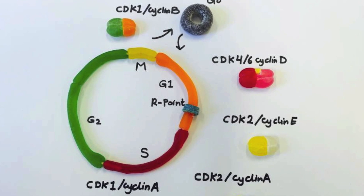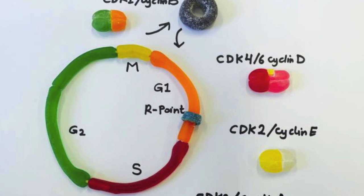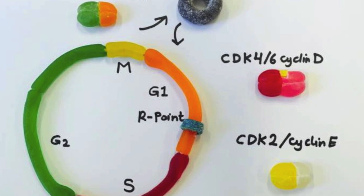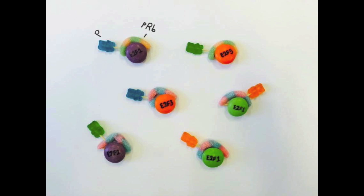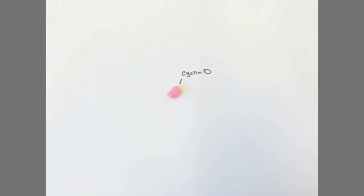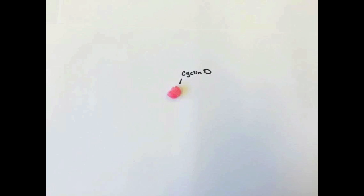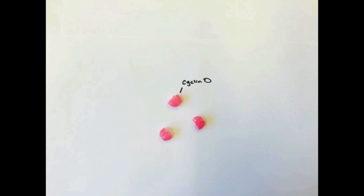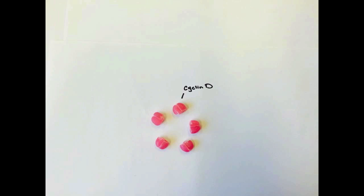Let us now take a closer look at the early G1 phase. As can be seen, the hypophosphorylated retinoblastoma protein is inhibiting the E2F transcription factors. When a mitogenic stimulus arrives at the cell, the cyclin-D levels then increase.